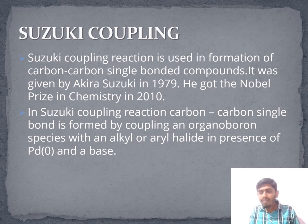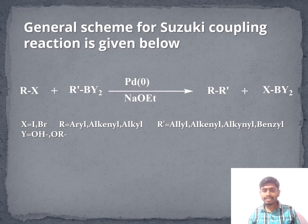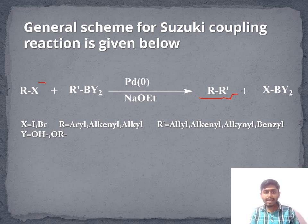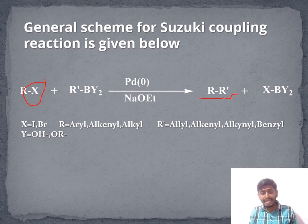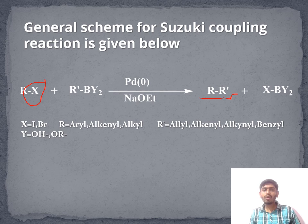Now we will discuss the general scheme for the Suzuki coupling reaction. In the general scheme, RX and the organoboron species in the presence of palladium and base give carbon-carbon bond formation at the last step. Here X may be a good leaving group such as iodine, bromine, OTs, or OMs. R may be aryl or alkyl, and R' may be allyl, alkyl, or benzyl — that which is attached to your boron compound. Y may be OH⁻ or OR⁻ and so on. This is the general scheme for the Suzuki coupling reaction.